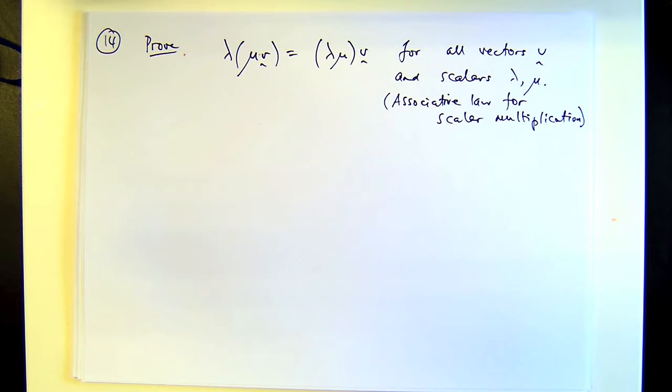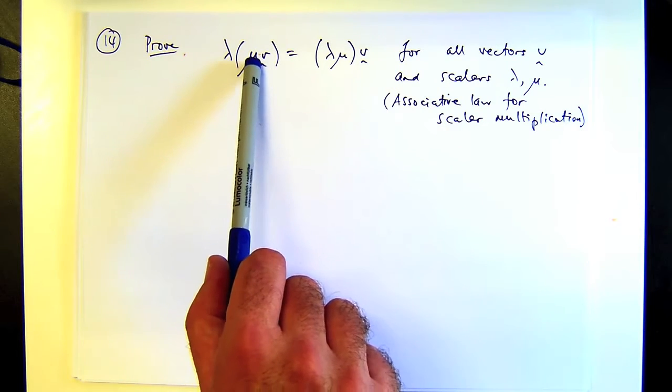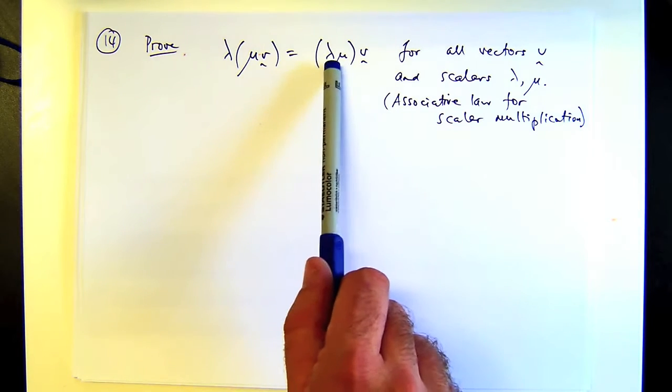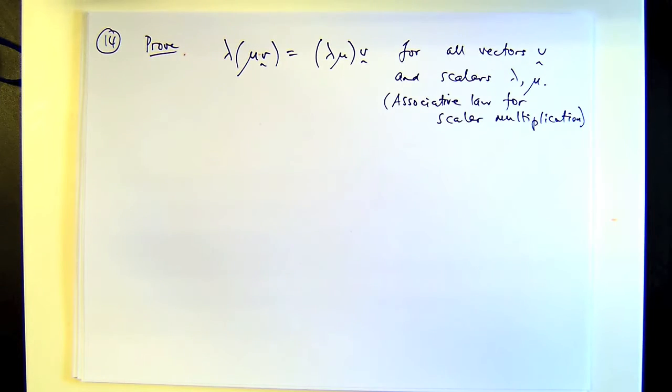It basically says that it doesn't matter if you multiply a vector with a scalar and then a second scalar, versus multiplying the two scalars together first and then multiplying that with the vector.